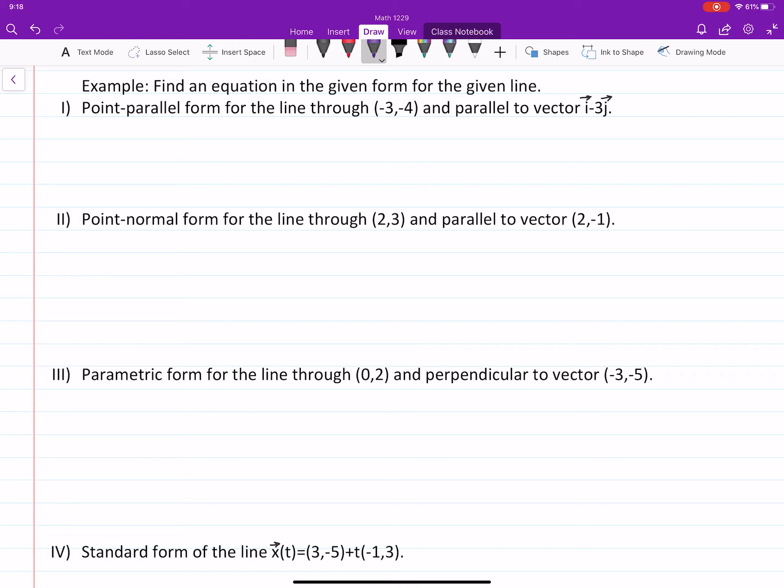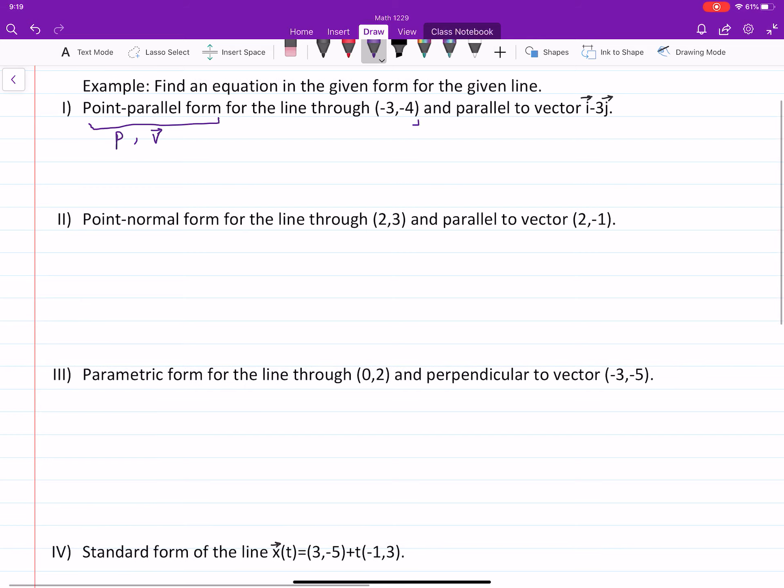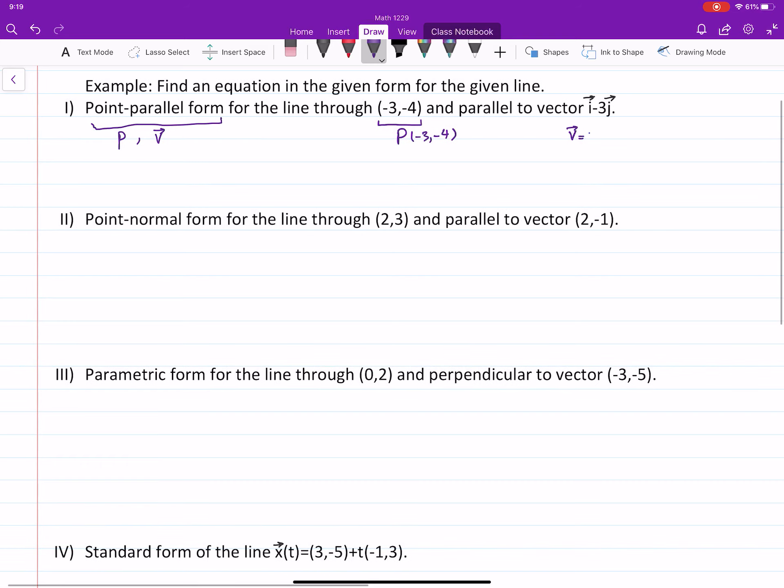We are looking for point parallel form. Right away I can say that I'm looking for a point and I'm looking for a parallel vector. Let's see what kind of information is given. The line is through the point, so that's P, and it is parallel to I minus 3J. Well, that's nice. That means that we have 1 and negative 3.